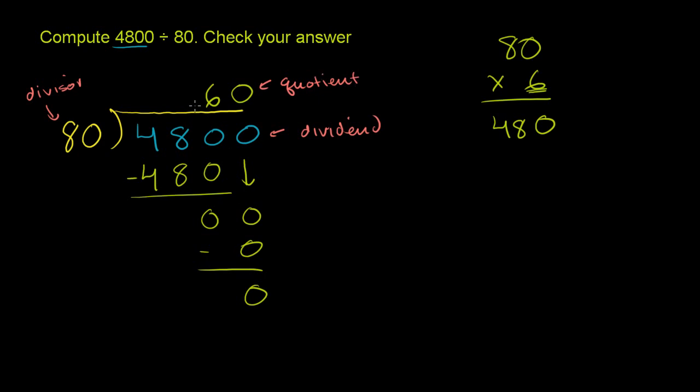So we just have to confirm that 60 times 80 is 4,800. So let's do that. 60 times 80. Now, there's two ways you could do it. You could just literally say 6 times 8 is 48, and then we'll have two 0's here. 1, 2. That's 4,800.